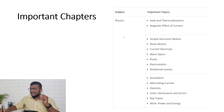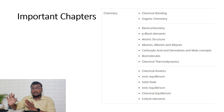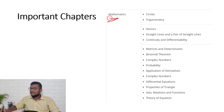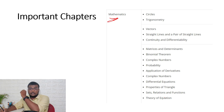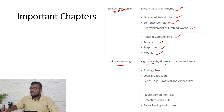Here are the important chapters. For Physics, start with Heat and Thermodynamics and end with Work, Power, and Energy — then complete any remaining topics. For Chemistry, start with Chemical Bonding and end with S-Block Elements. For Mathematics, start with Circles and end with Theory of Equations. For English Proficiency: synonyms and antonyms, one-word substitution, sentence completion, rearrangement of jumbled words, tenses, prepositions, and modals. For Logical Reasoning: figure matrix, figure formation and analysis, analogy test, series test, numerical and alphabetical series, figure completion, paper folding and cutting.